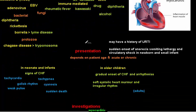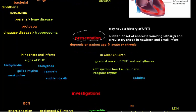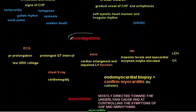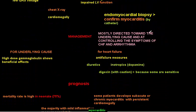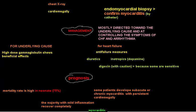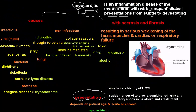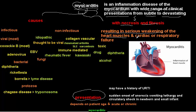Our topics in this video are: the causes of myocarditis, what happens in myocarditis, the presentation, the investigations needed to diagnose it, the management, and the prognosis. Starting with the definition: it is the inflammation of the myocardial tissue with necrosis and fibrosis.